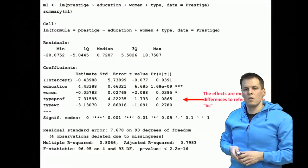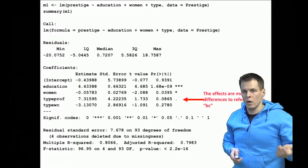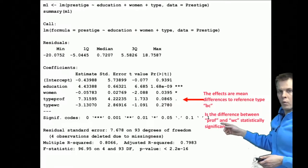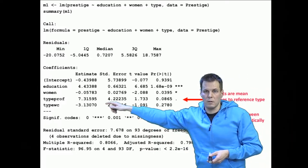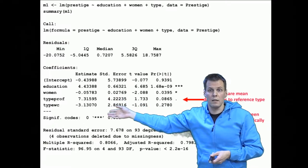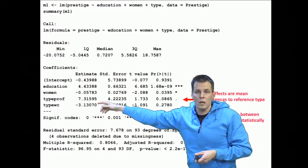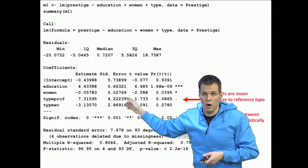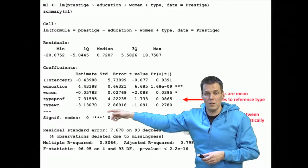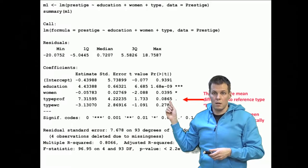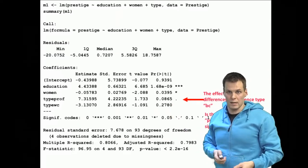Sometimes knowing the difference between categories and the reference category is not enough. What if we wanted to know what the difference between professional and white collar is, and whether that is statistically significant? The difference between professional and white collar occupations is simply the sum of these two estimates, so it's about 10 — but is that statistically significant? We can see that the p-value for professionals is about 0.08 for an estimate of 7, so maybe a difference of 10 is significant when a difference of 7 is close to significant. However, we need to do a proper test to assess whether that's the case.